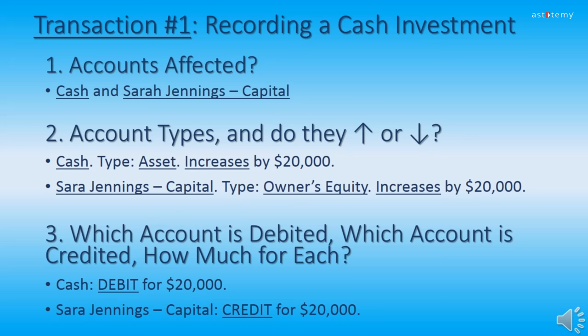On this slide we go through the first three steps to record a cash investment for transaction one. Step one — which accounts are affected? We've identified cash and Sarah Jennings Capital as the two accounts affected. Step two — what are the account types and do they increase or decrease? Cash is an asset type and capital is an owner's equity type. If you put cash into a company it's going to increase, and if you increase your owner's equity it's also going to increase. So both the cash asset and the owner's equity capital are going to increase.